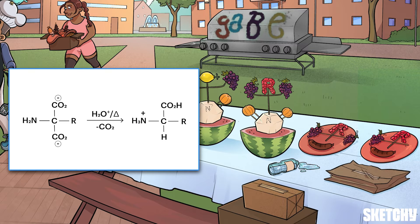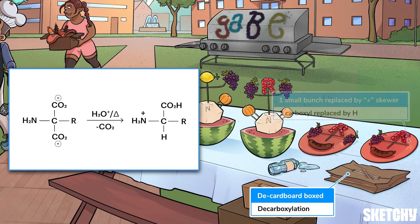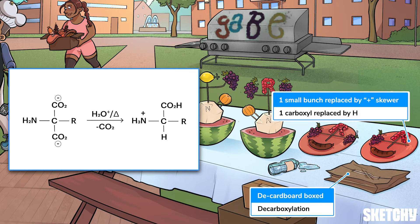The final step in the Gabriel synthesis is a decarboxylation, which you can remember by this smushed cardboard box that's been de-boxed. On the plate above this box, one of the small grape bunches has been replaced by a plus-shaped toothpick as a reminder that one of the carboxyl groups is replaced by a hydrogen during this decarboxylation. Like any decarboxylation, this all happens with the help of heat. And now we've got a proper amino acid, which means we've finally made it to the end of the Gabriel synthesis.